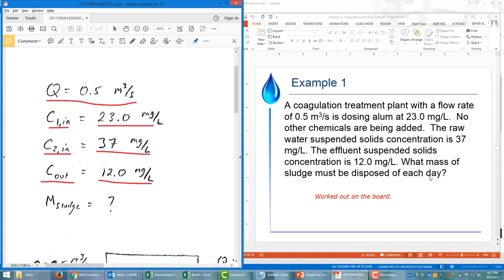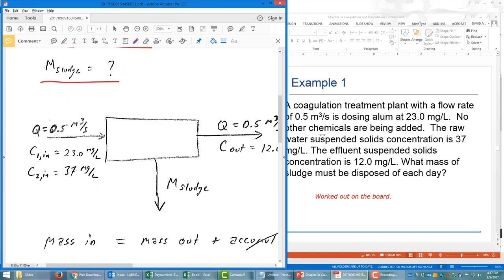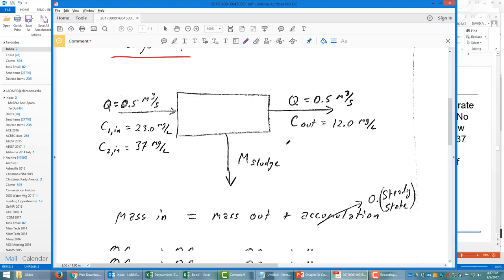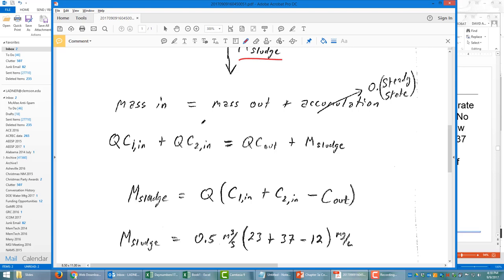And then we're asked to find the mass of sludge that must be disposed of each day. What this boils down to is a fairly straightforward mass balance where we can calculate the mass of sludge knowing the mass coming in and the mass going out of the treatment plant. So here we have our Q, our C1, our C2 coming in, two inputs of mass, and one output of mass on the right, and then the rest of the mass has to be that sludge coming out of the bottom of the sedimentation basin, or perhaps out of the filters.